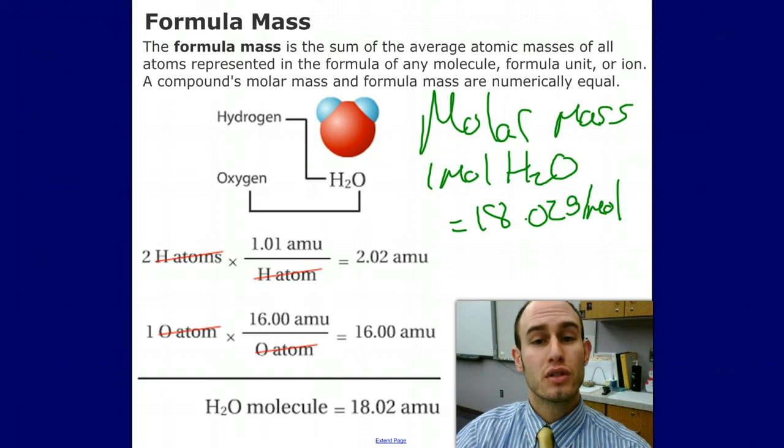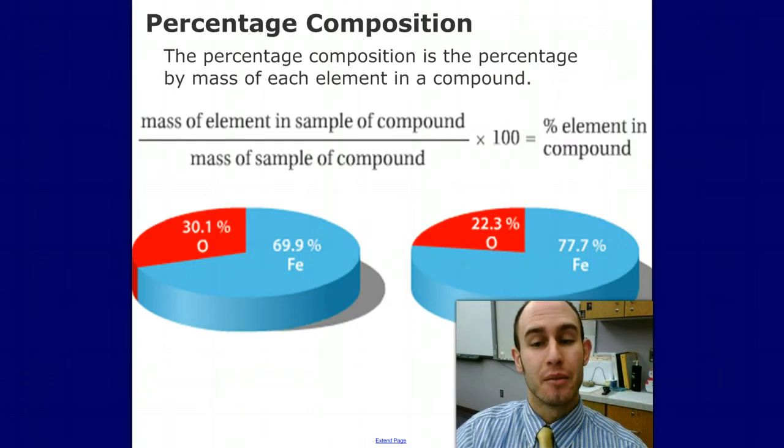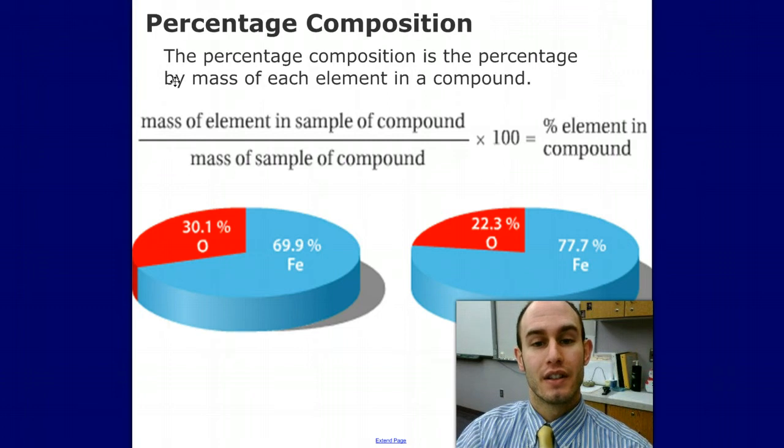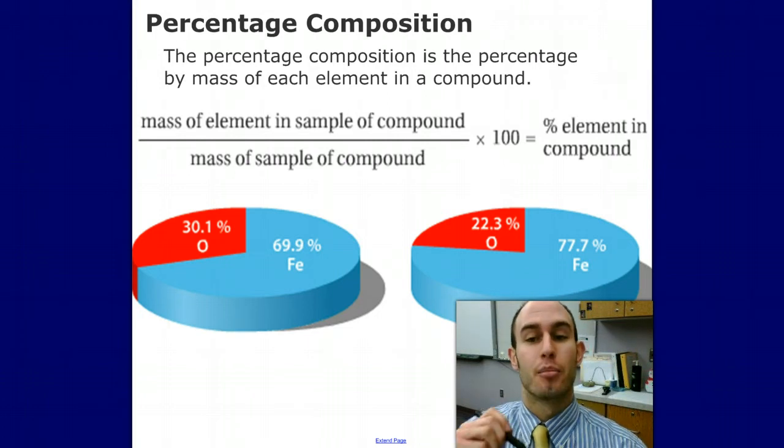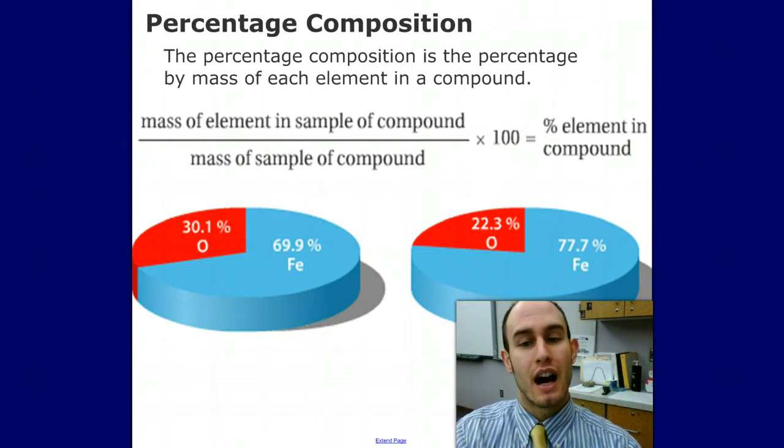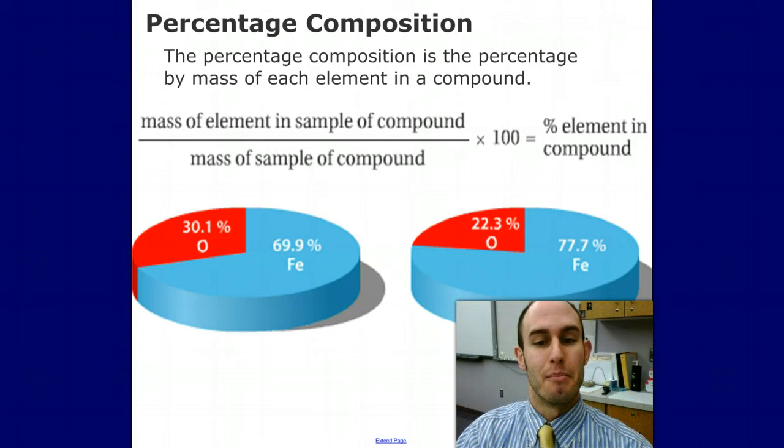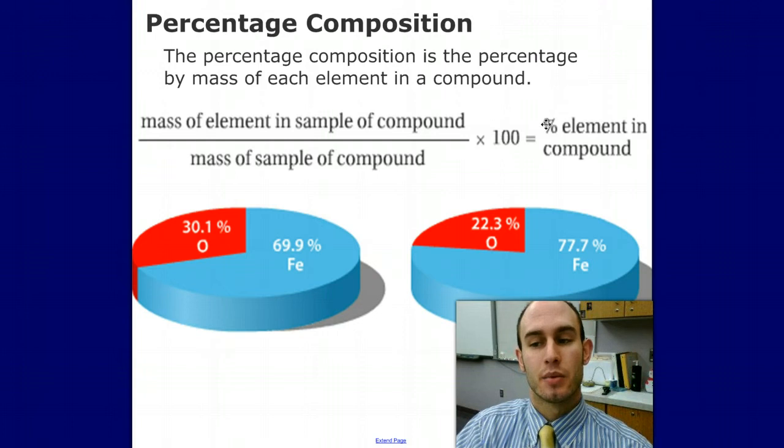Now we use the formula mass to find percent composition. Here is the definition—you need to know this. The percentage of a compound: divide the mass of the element by the mass of the whole sample, multiply it by 100, and that is the percent of the element in a compound.